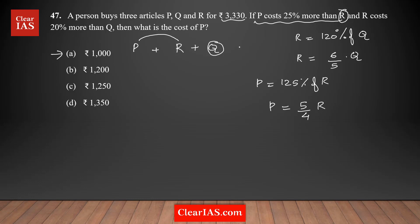I'm going to form the equation P + R + Q = 3330. I'll convert this into a single variable, find that variable, then find the value of P. Instead of P, I'm going to write in terms of Q. P equals 5/4 R. Instead of R, I'll replace it with 6/5 Q. Simplifying, P equals 3/2 Q.